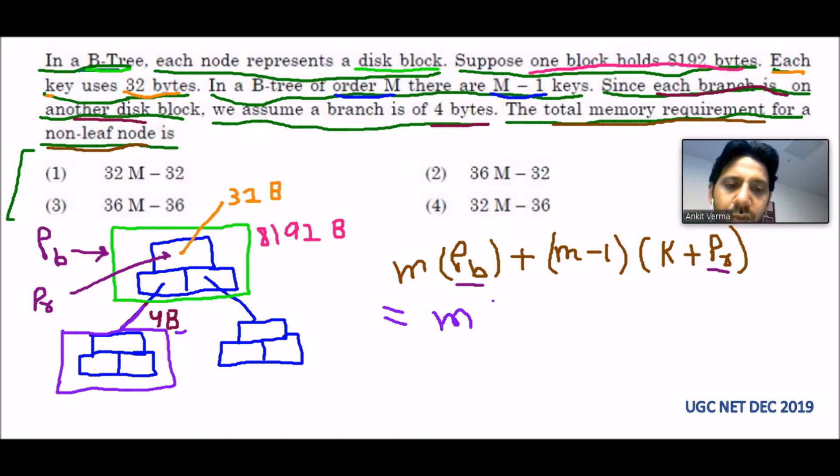So M into 4, plus what is M minus 1? It will be the same. What is the key value? The key value they have given us is 32, so K will be 32.